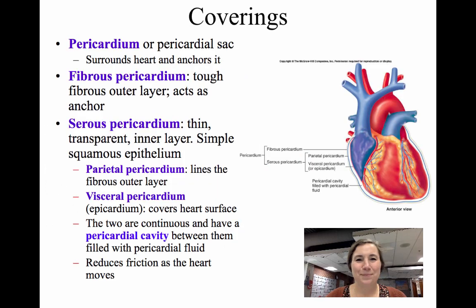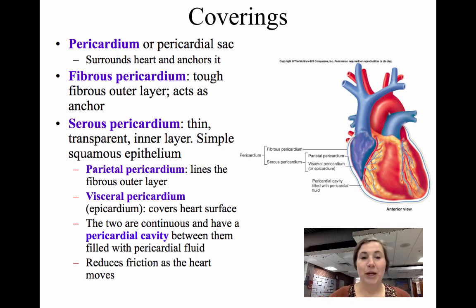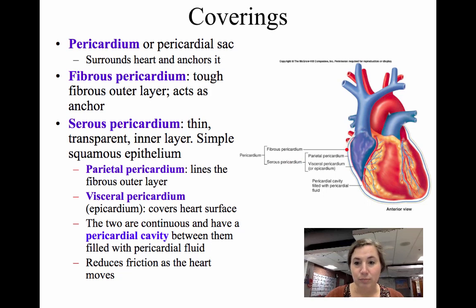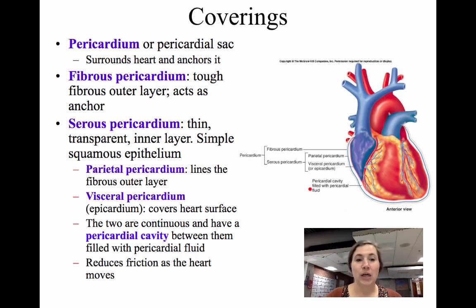The coverings of the heart start with the pericardium — a sac that surrounds the heart and anchors it to the thoracic cavity. We've seen these in the serous membranes; they're just given a pericardial name. It includes the fibrous pericardium, the outermost layer, which is the anchoring portion that keeps the heart from floating around in the thoracic cavity.